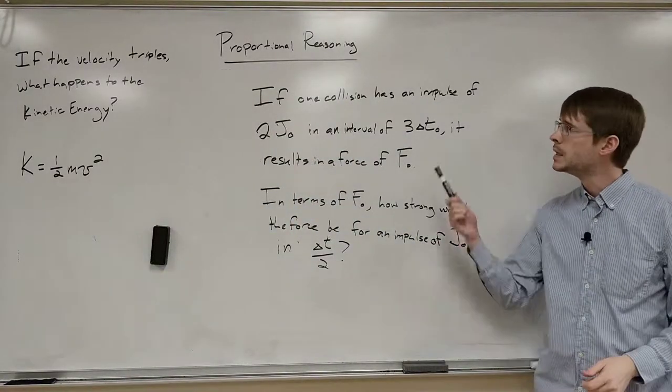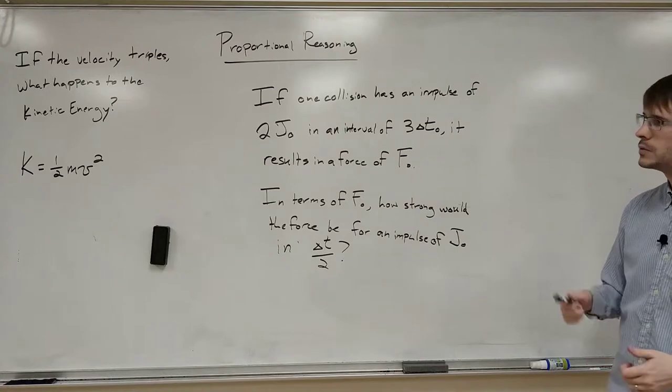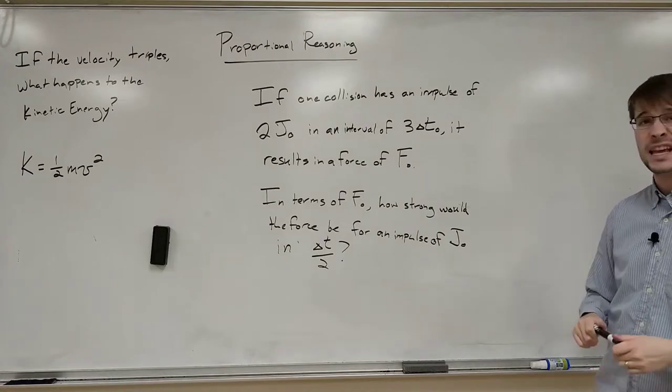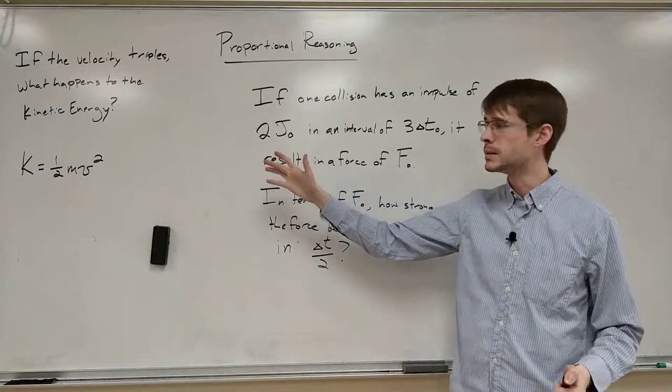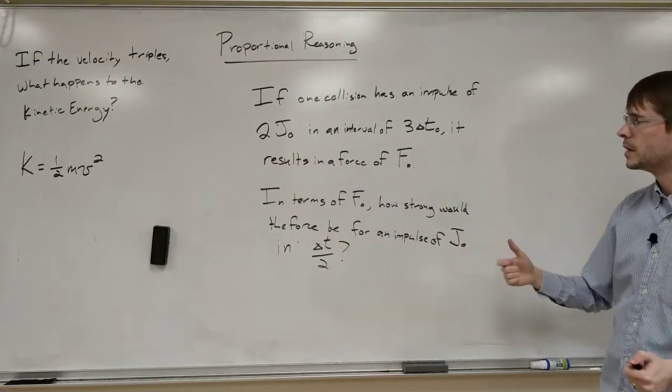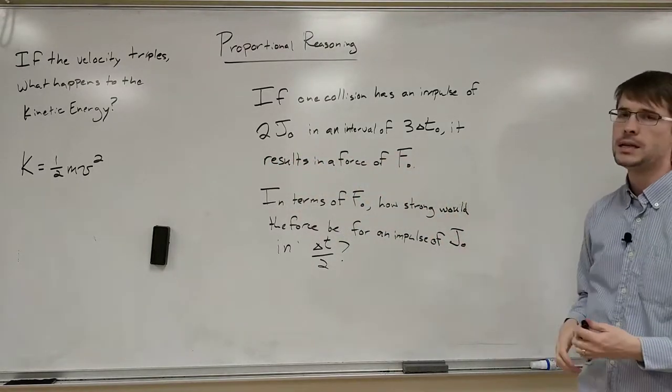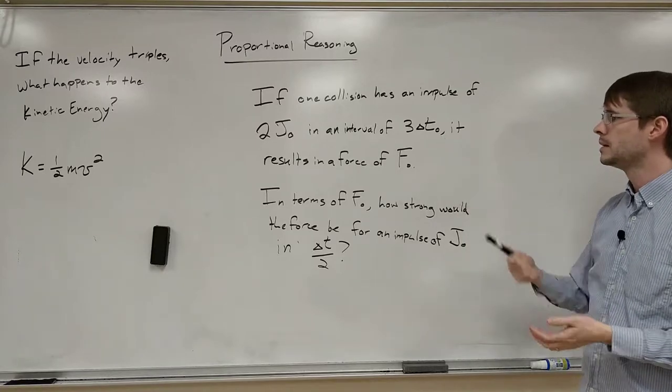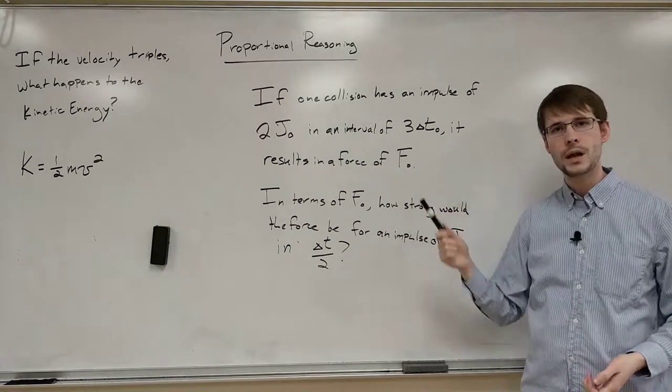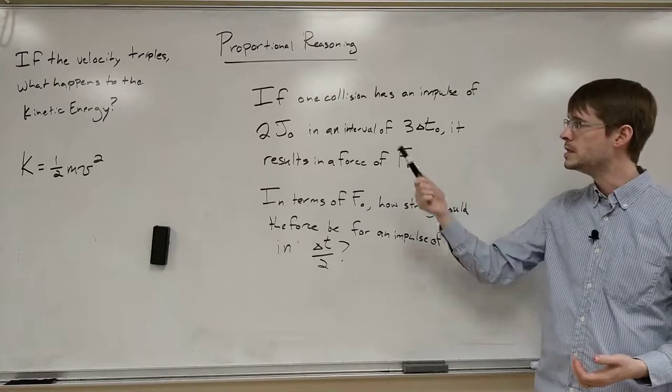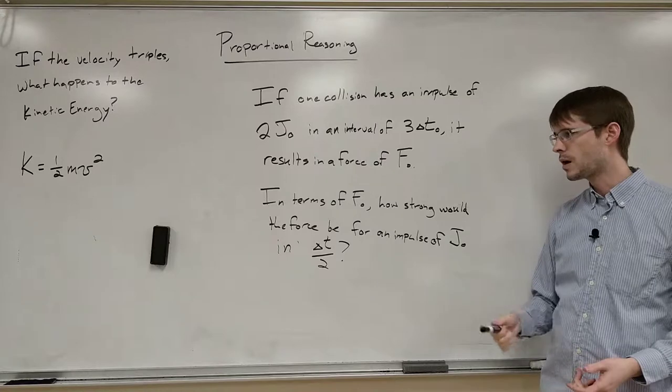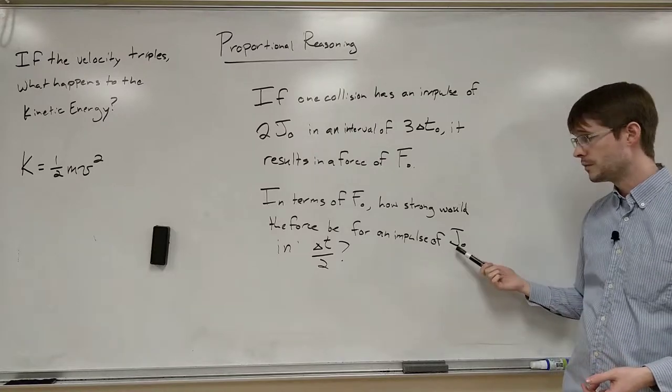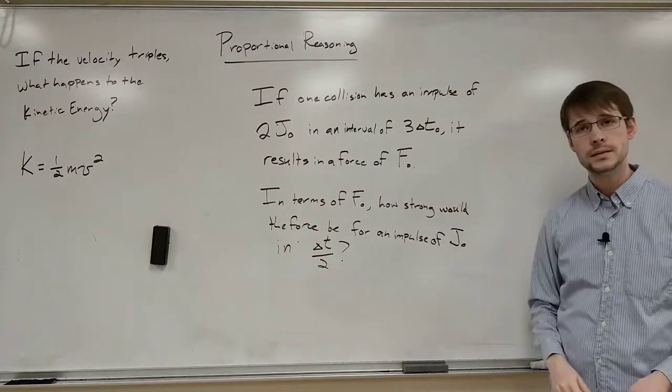Let's take a look at one more problem solved this way. So let's take a look at this question. If one collision has an impulse of 2 j0, so that's the impulse, that's the number. You can think of this as a number even though it's not really written as a number. In an interval of time of 3 times delta t0, which would be some other interval. This is 3 times that big. It results in a force of f0. That's the original force for these situations. In terms of f0, how strong would the force be for an impulse of j0 in delta t over 2?